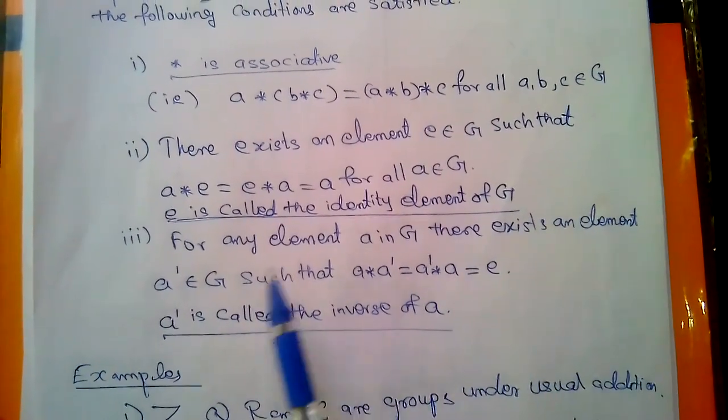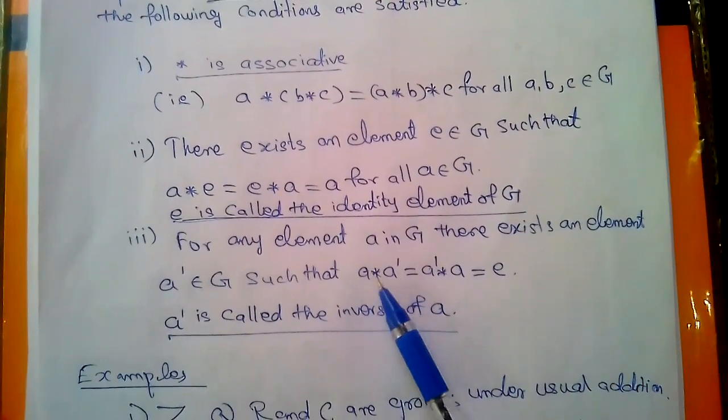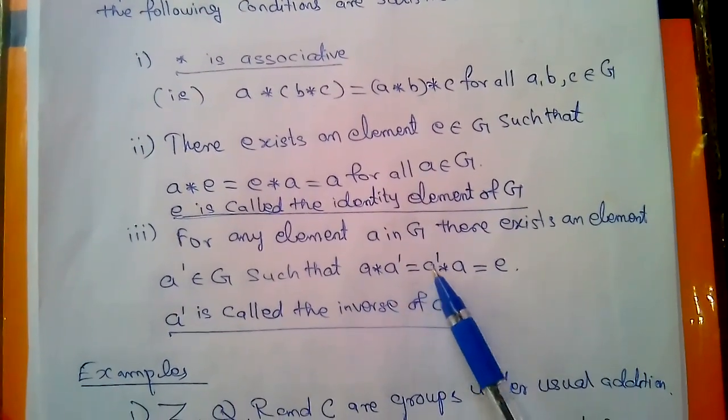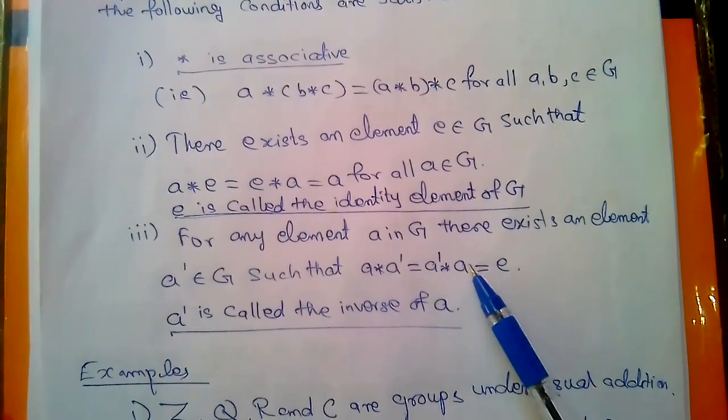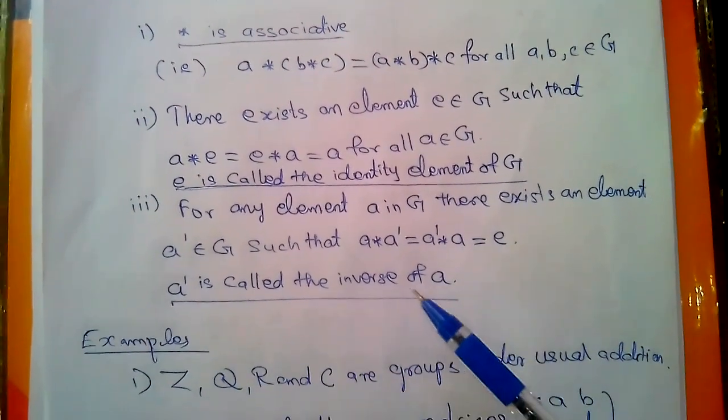For any element a in G, there exists an element a dash belongs to G such that a star a dash is equal to a dash star a is equal to e. a dash is called the inverse of a.